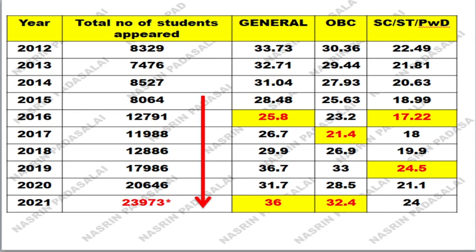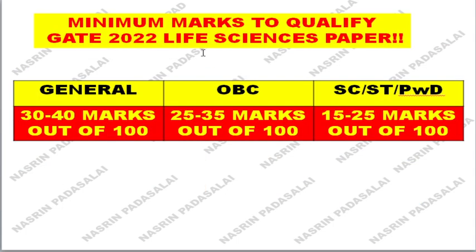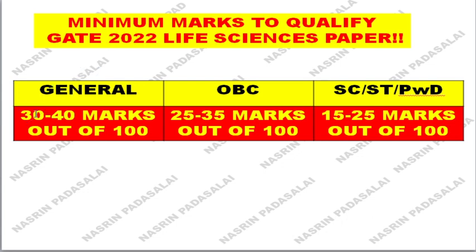The minimum mark to qualify GATE 2022 life sciences paper: if you are in the general category, you should aim to get between 30 to 40 marks out of 100 — ideally target 40, but at minimum attempt for 30. If you are OBC, target 25 to 35 marks out of 100. If you are SC, ST, or a person with disability, target 15 to 25 marks out of 100 in order to clear this GATE life sciences paper.